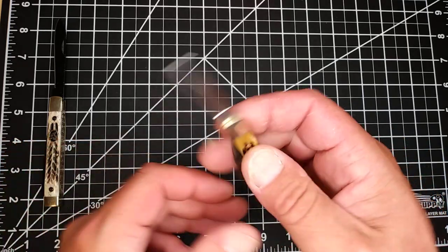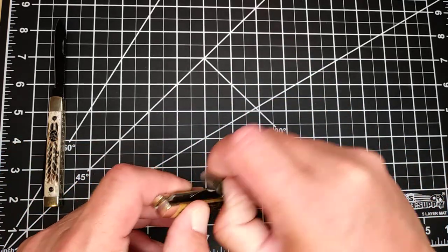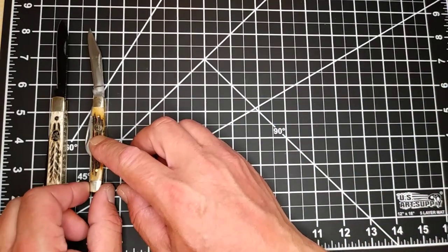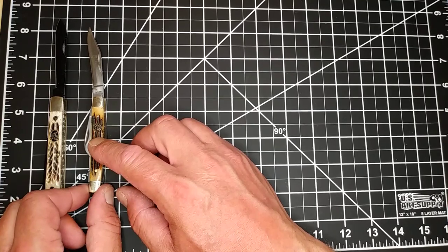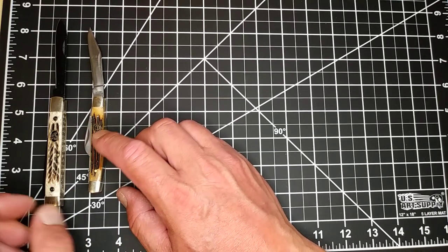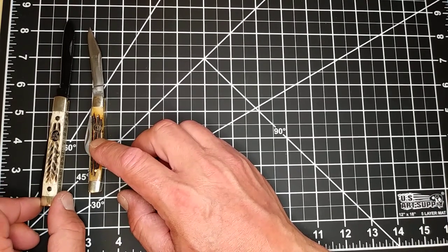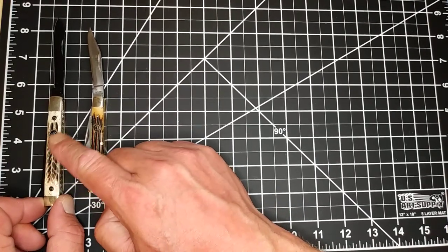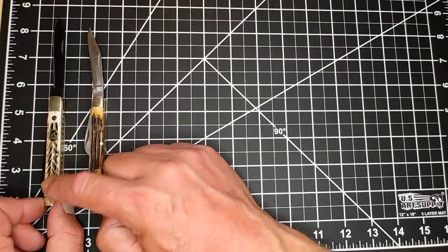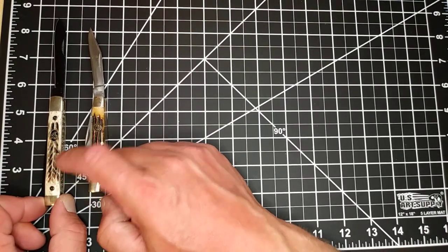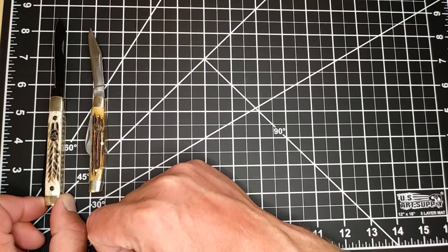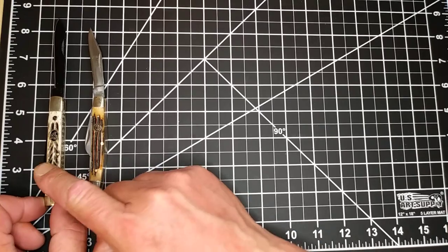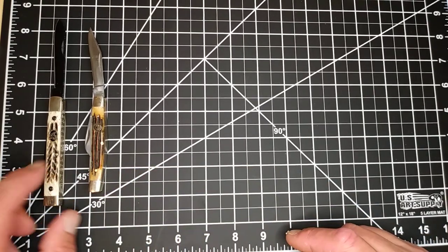Of course, forgot to mention the prices on these. This small winter bottom stockman was $10.52, I think like a dollar thirty something more than Thrifty Kniffy's. This torched bone Frost medical knife, doctor's knife, the small doctor's knife, was $15.20, a little bit more pricey for the series, probably has to do with the back spring file work.